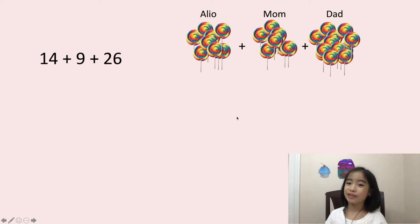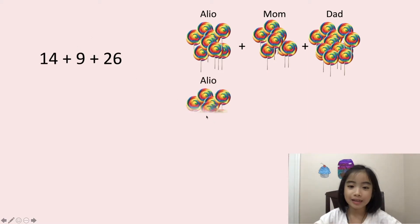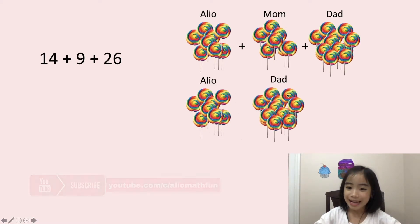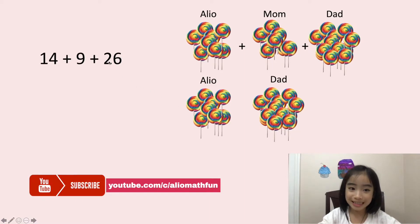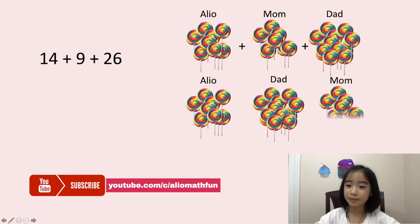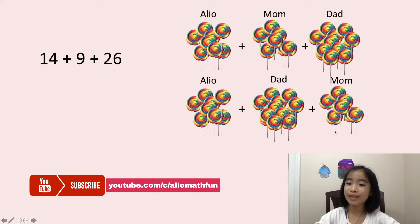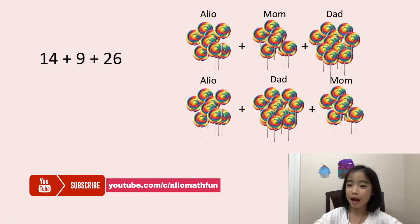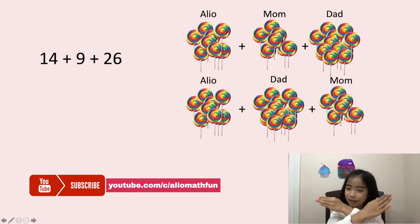I can also do it another way. Again, I have 14 lollipops. My dad gives me 26 lollipops. Then my mom gives me 9 lollipops. When we add the lollipops together, we still get the same number of lollipops. So the order does not matter.